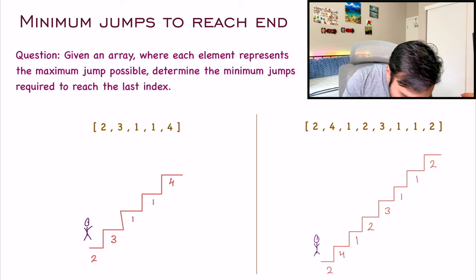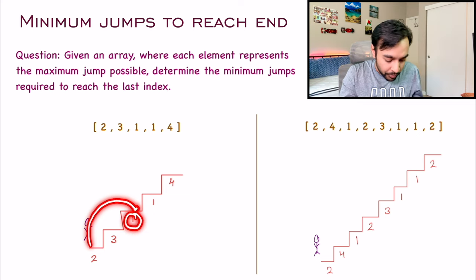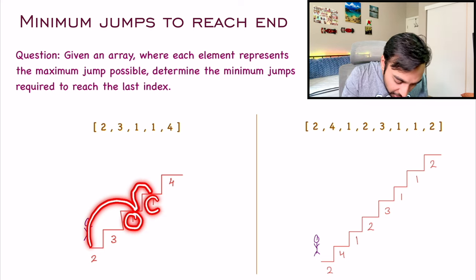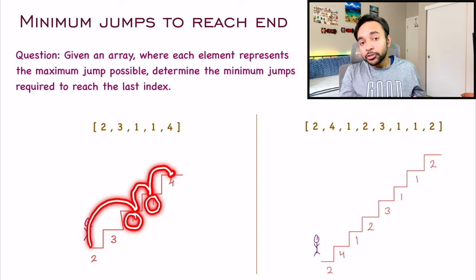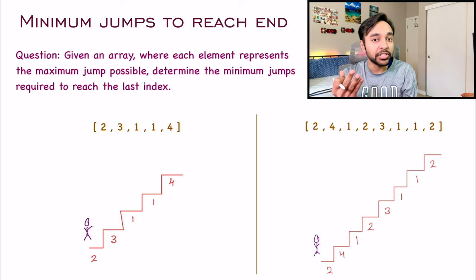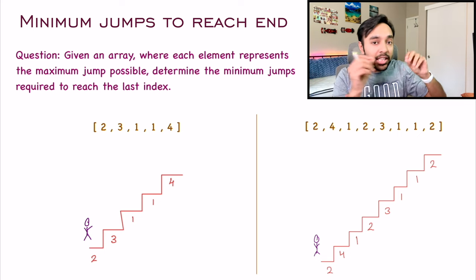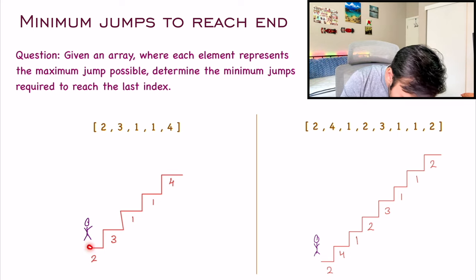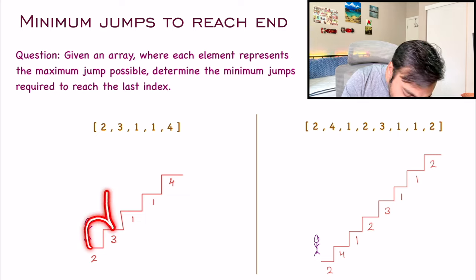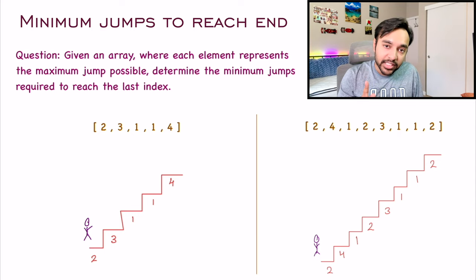There are other ways you can reach the last index. For example, one situation could be I make two jumps from over here and now I can just make one step, so I will land here. Once again, I can only make one jump, so I will make one more jump. This way I took a total of three jumps. So out of all such different combinations, the minimum jumps will come out to be two — that is when you take one jump and then a second jump. So for the first test case, your answer will be two.